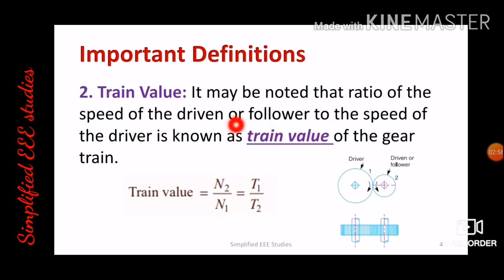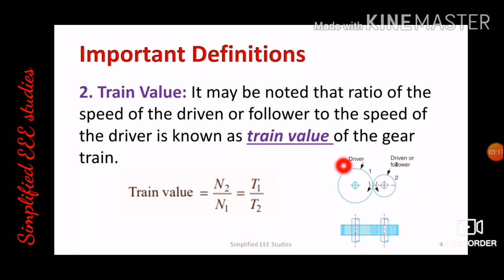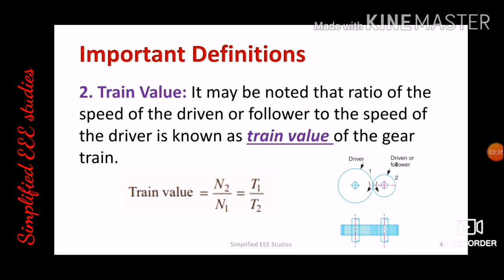The train value is defined as the ratio of the speed of the driven or follower to the speed of the driver, which is N2 by N1. This can be written as N2 by N1 equals T1 by T2. This also confirms that speed is inversely proportional to number of teeth. These are the two important terminologies related to gear trains.